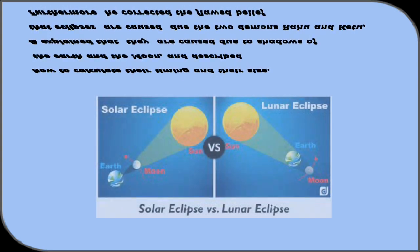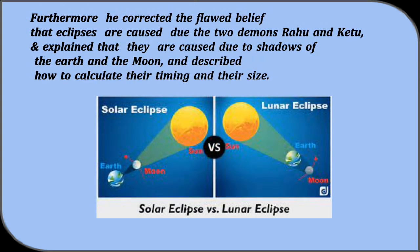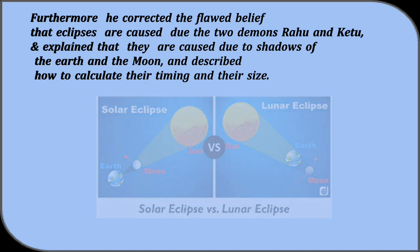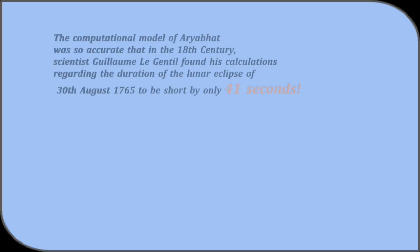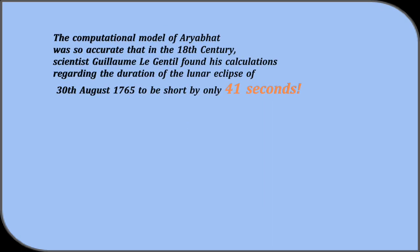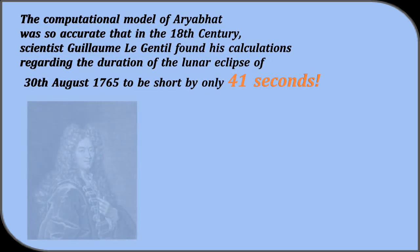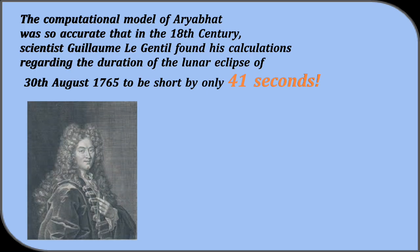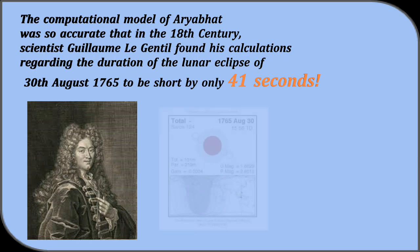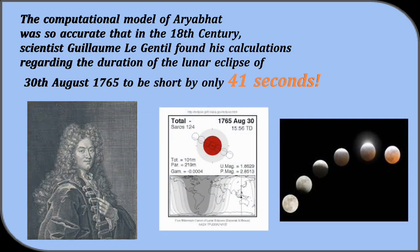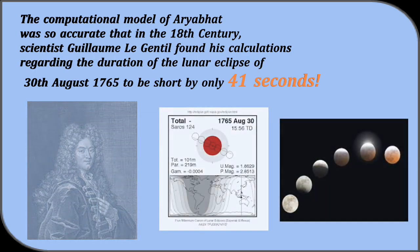Furthermore, he corrected the flawed belief that eclipses are caused due to the two demons Rahu and Ketu and explained that they are caused due to the shadows of the earth and moon and described how to calculate their timing and their size. The computation model of Aryabhata was so accurate that in the 18th century scientist Guillaume Le Gentile found his calculations regarding the duration of the lunar eclipse of 30 August 1765 to be short by only 41 seconds. Isn't it amazing?